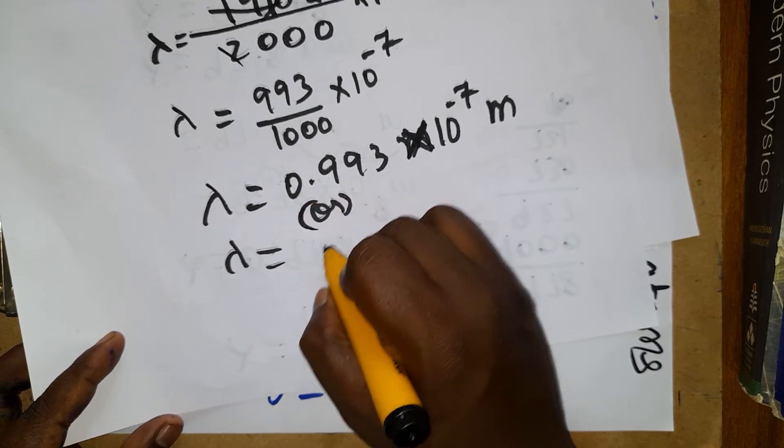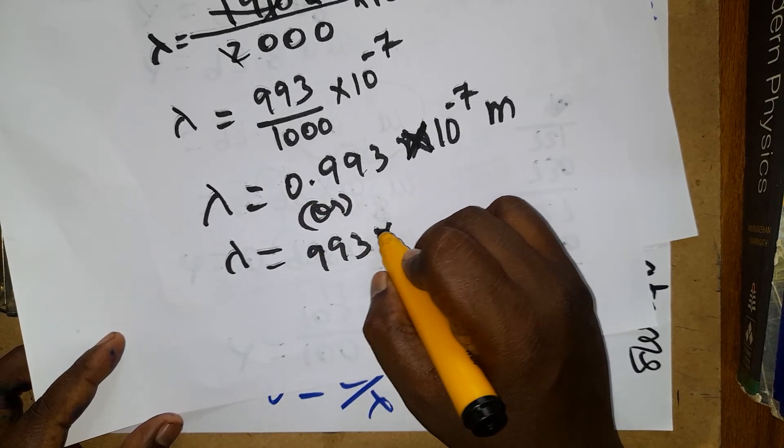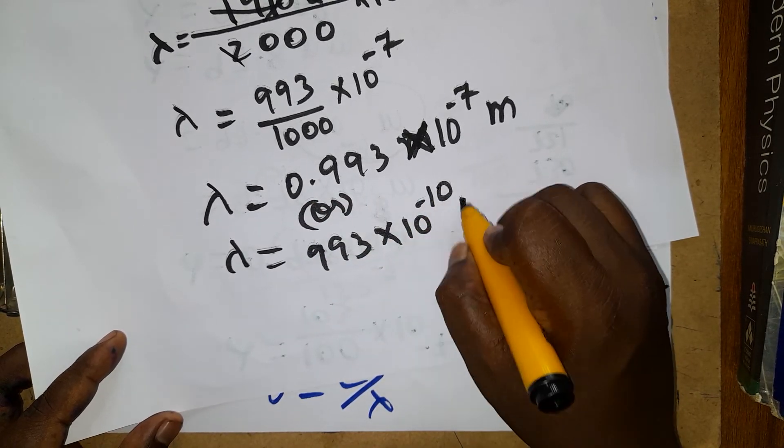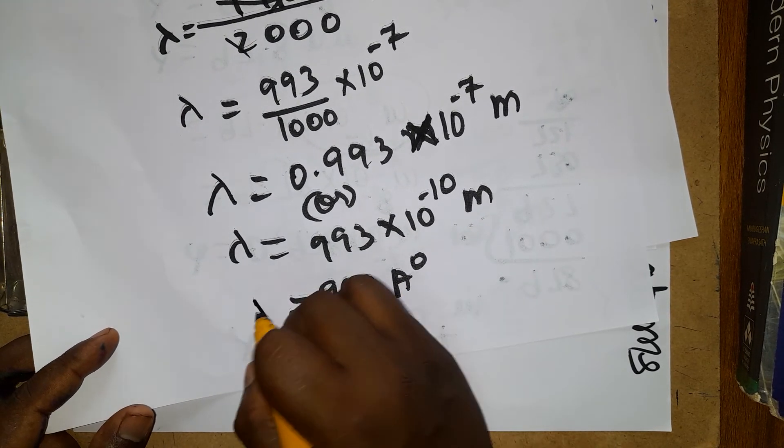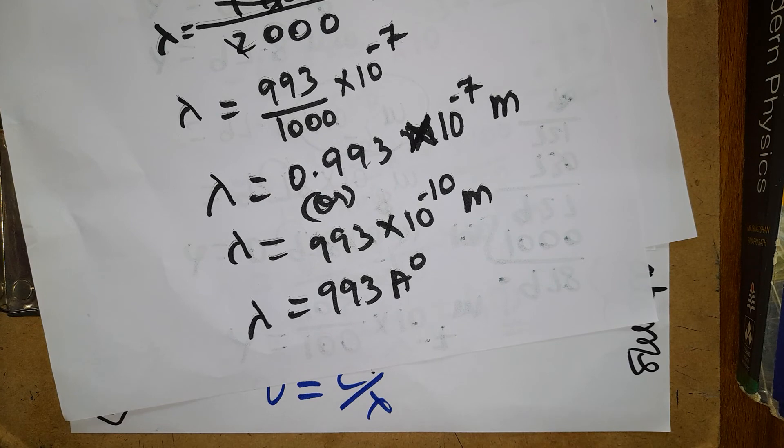Same value you can write as 993 into 10 power minus 10 meter, that's approximately 993 angstrom. Thank you for watching my channel. If you like my channel please subscribe. Thank you everyone.